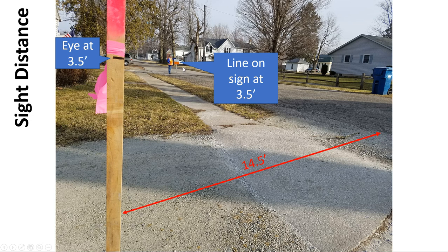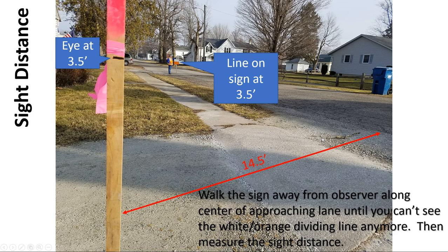The 14.5-foot measurement is from the edge of the travel lane, not including any shoulder. As the object sign is walked back up the road, once you can't see the orange dividing line anymore — whether it disappears over a hill, behind a building, or a car blocks it — that point marks your available sight distance. If you can still see it at over a thousand feet, you have more than enough for any required distance.